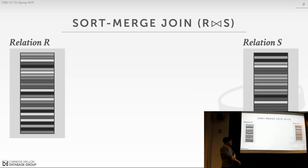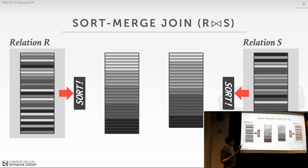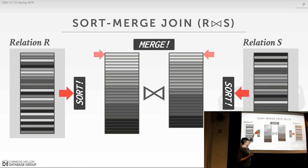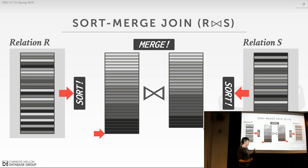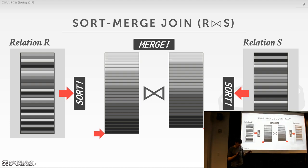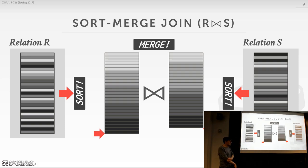Visually: we have our inner relation and outer relation, both sorted on the join key, and then in the merge phase we just have iterators that scan in lockstep and do comparisons. Now, where things get confusing is that today we're going to use merge sort to do our sort-merge join. I'll try to be careful to distinguish between the merge phase of merge sort versus the merge phase of the sort-merge join.